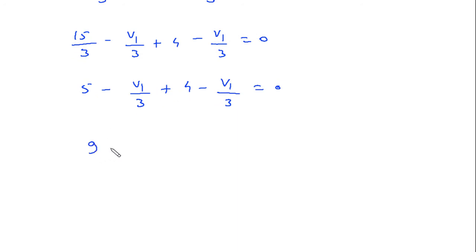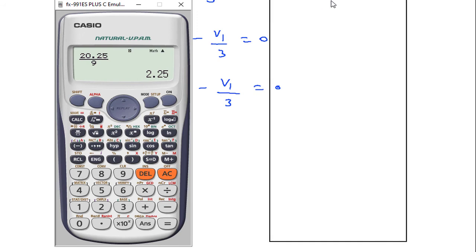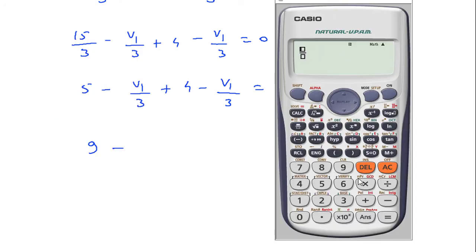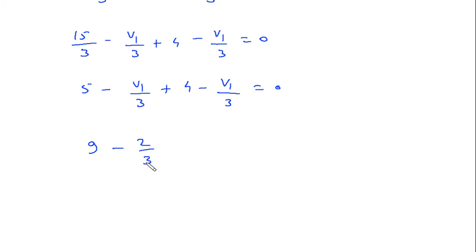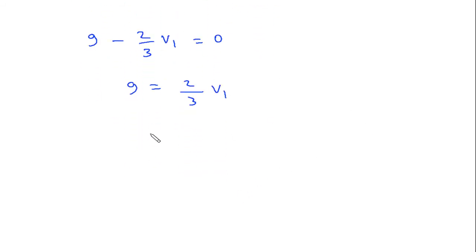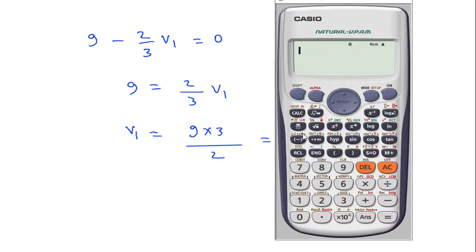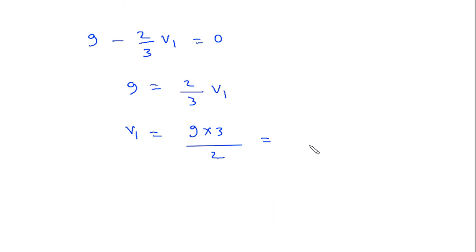So this will be 5 minus V1 by 3 minus V1 by 3 minus V1 by 3 is equal to 0. So 9 is equal to 2 by 3 V1, so V1 is equal to 9 into 3 by 2, which is 13.5. V1 is equal to 13.5 volts.